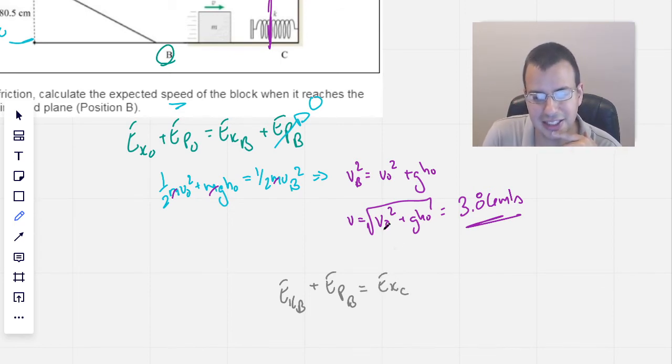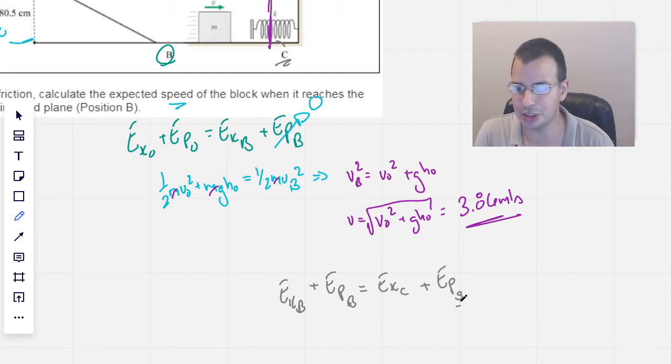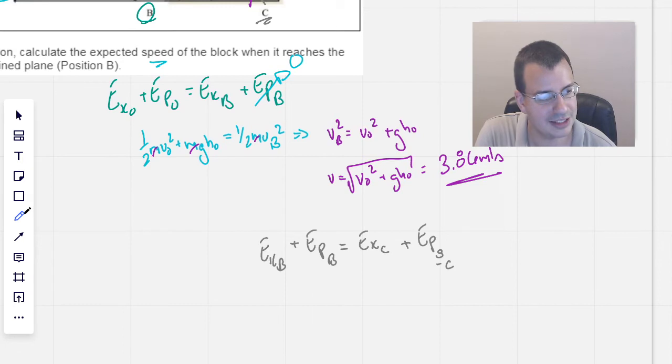Equals energy kinetic at C, when the spring is complete, as compressed as it's going to be, plus energy, I'm going to call this potential spring, the little s there means, because it's energy potential spring as opposed to gravity, and it's still for C. I know, really confusing, but bear with me here. Stick with me, you got it.